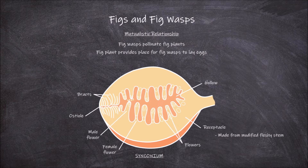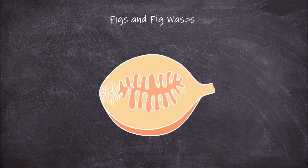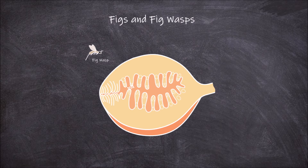Each of these female flowers has only a single ovary. The life cycle of fig wasps is reliant on the fig fruit. Fig plants that don't self-fertilise are reliant on fig wasps for reproduction and the completion of their life cycle.